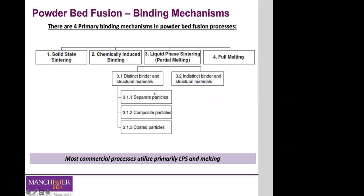There are different types of particles used in liquid phase sintering. The two main classifications are distinct binder and structural materials. These can be separate particles, a composite material where each particle incorporates both, or the structural material coated with binder that is subsequently melted by the laser. For polymers, indistinct binder and structural materials are more common. Liquid phase sintering is focused on because it is the most common mechanism in commercial systems available to industry.